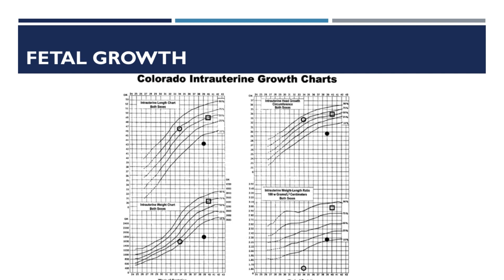This picture depicts the Colorado intrauterine growth charts, showing the expected growth of the fetus intrauterine according to age of gestation. We have here the 10th percentile, the 50th percentile, the 90th percentile, and so on.